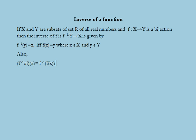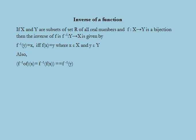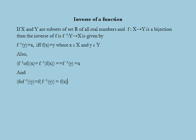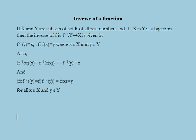Also, the composite function f⁻¹ ∘ f satisfies: f⁻¹(f(x)) = f⁻¹(y) = x. And the composite f ∘ f⁻¹ satisfies: f(f⁻¹(y)) = f(x) = y, for all x ∈ X and y ∈ Y.